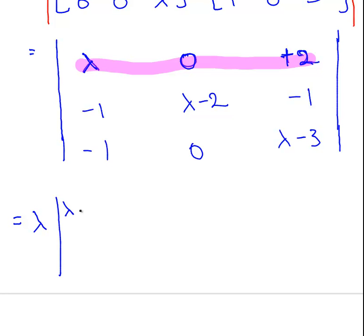I'm just going to state that it's lambda times the determinant of its sub-matrix, which is what you get when you subtract the first row and first column where lambda is, and we have that expression there. Minus 0, well that goes to 0 automatically.